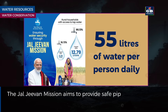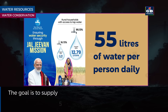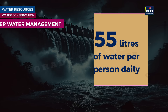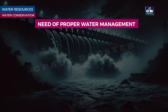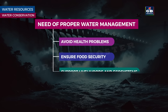The Jal Jivan Mission aims to provide safe piped drinking water to every rural household. The goal is to supply 55 litres of water per person daily on a long-term basis. Proper water management is essential to avoid health problems, ensure food security, and support livelihoods and ecosystems. Mismanagement and overuse of water can lead to an ecological crisis.